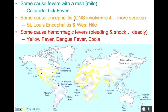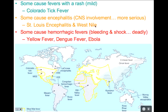West Nile is an encephalitis infection caused by an arbovirus, transferred via mosquitoes. It generally causes flu-like symptoms for most people, but about 1% of adults will develop encephalitis. The vast majority of people will be fine. To control St. Louis encephalitis and West Nile, public health focuses on controlling the mosquito population — getting rid of standing water, wearing insect repellent, and all things that reduce your exposure to mosquitoes.